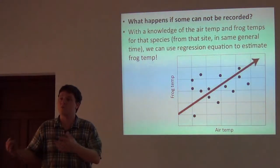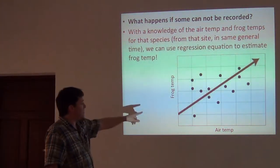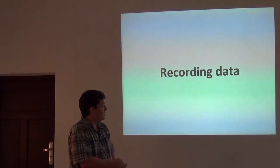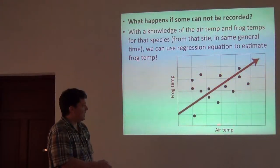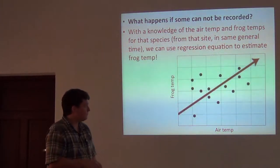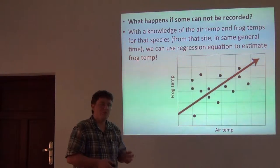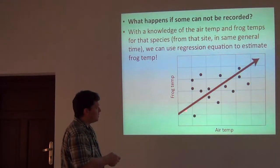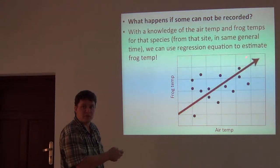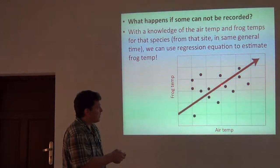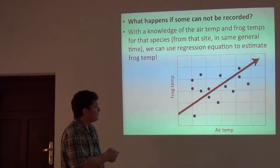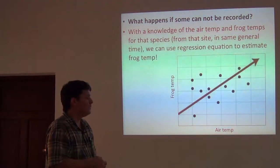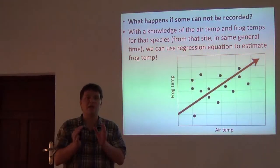You can salvage the situation if you get some of the data. With a knowledge of the air temperature, for example, and a knowledge of the frog temperatures for other individuals in that same population, we can use a regression equation to estimate a frog temperature, and this saves us from having to discard the data. So for one species of frog where I've recorded 15 individuals, here's the relationship between the air temperature I recorded and the frog temperature for all of those individuals. On the 16th try, I got the air temperature but the frog escaped. With this regression equation — this line through the data — I can extrapolate from the air temperature and get the frog body temperature, and then I can statistically compare this to other frogs and other species.